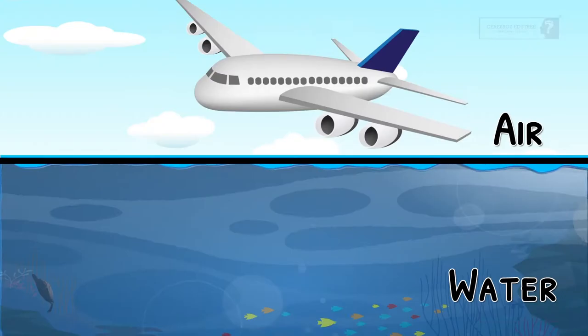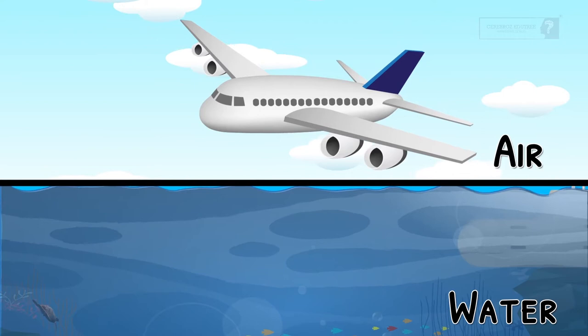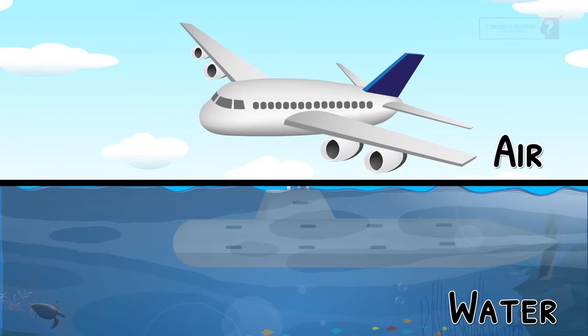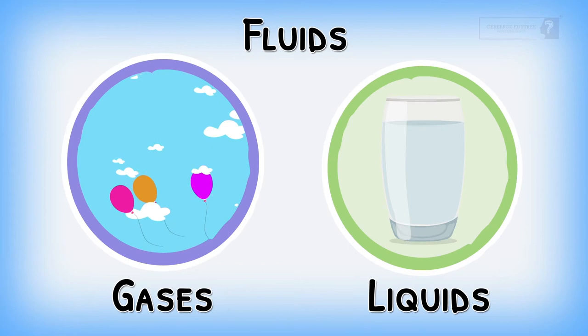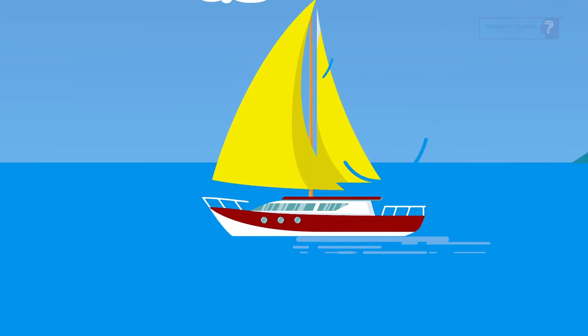What is fluid friction? Water and other liquids, and even air and other gases, exert a force of friction when objects move through them. In science, gases and liquids are called fluids. So when fluids exert a force of friction on objects in motion through them, it is called fluid friction.